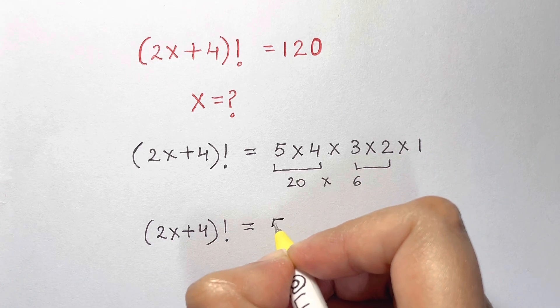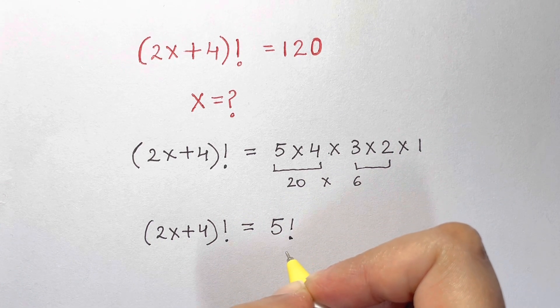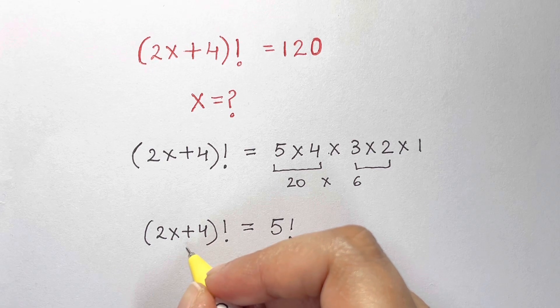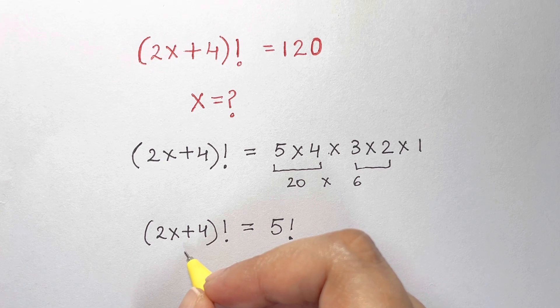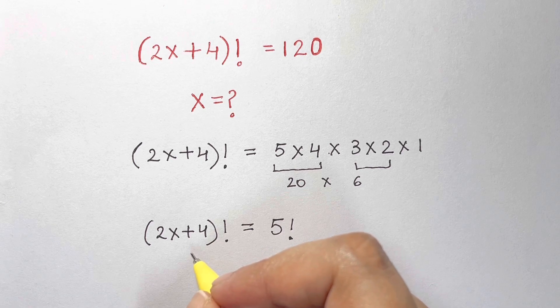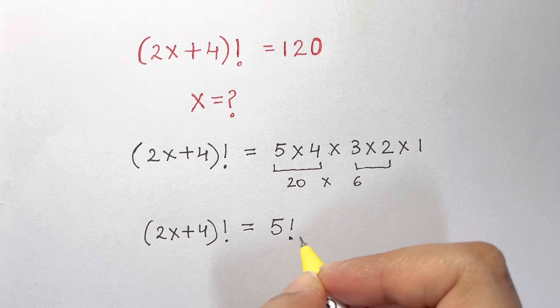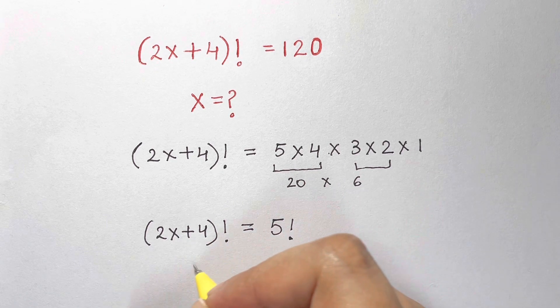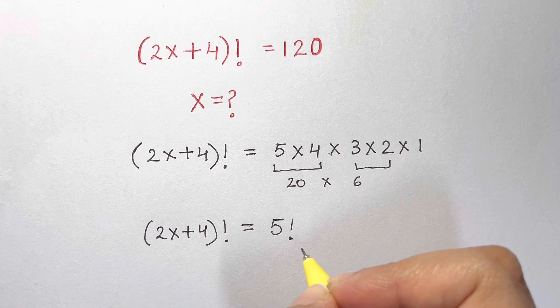Now, as x factorial is a strictly increasing function, an injective function, that's why if (2x + 4)! equals 5!, this binomial and 5 must be equivalent. So we can equate them. Factorials get cancelled.